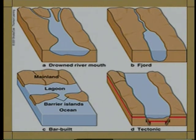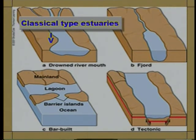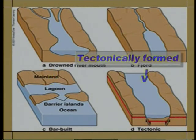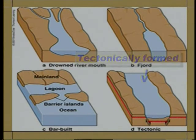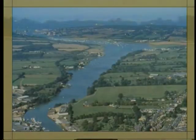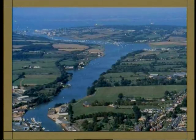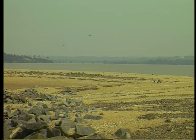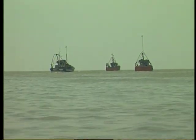Estuaries are classified into four basic types: classical type, fjord type, bar-built estuaries and tectonically formed estuaries. The classical type estuaries are called ria-type estuaries — they are drowned river valleys and coastal plain estuaries. Most familiar is the drowned river valley type, available in different parts of the world where the rise of sea level and the lowering of the river mouth create these classical estuaries.